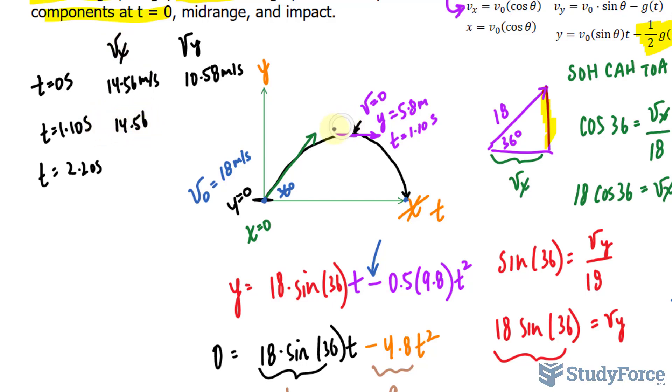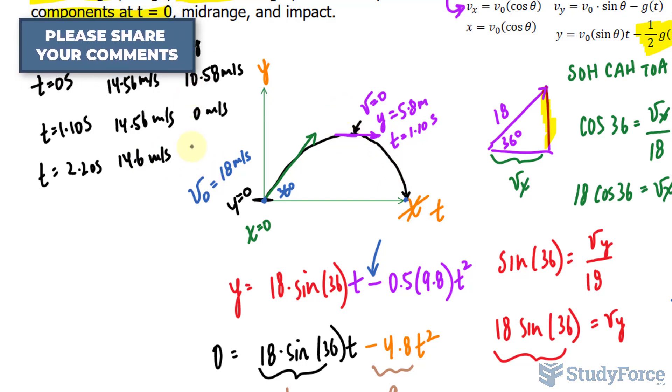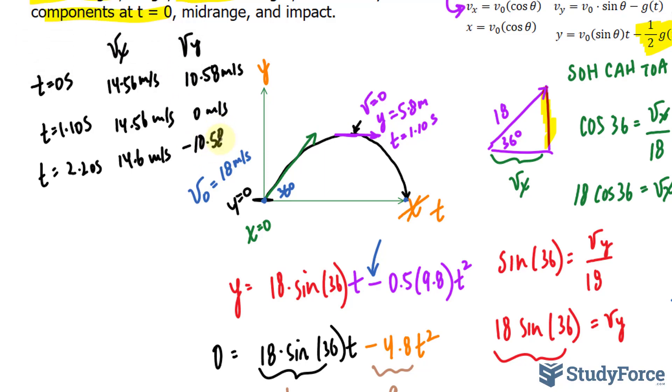but since the ball has flatlined at that point, the y component becomes 0 meters per second. And at 2.20, the x component is still 14.6, and since the ball is going downwards after it's reached its peak, -10.58 meters per second for the y component.